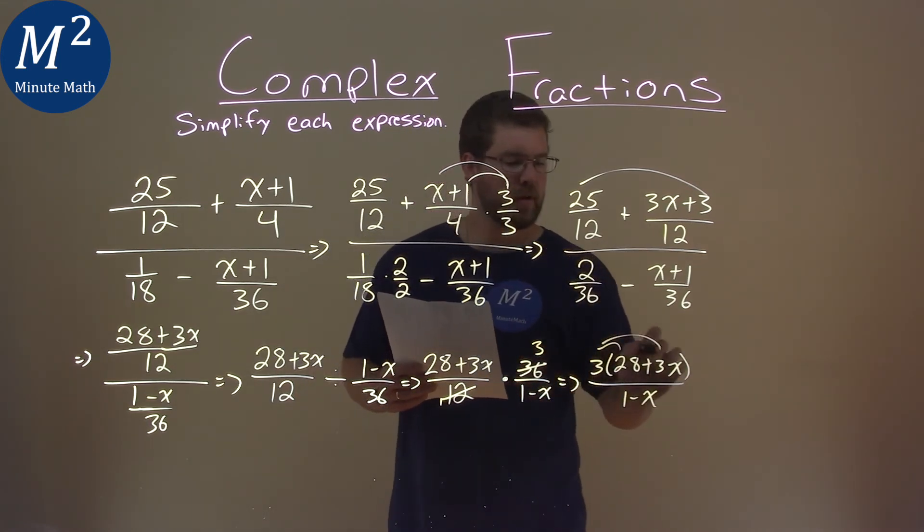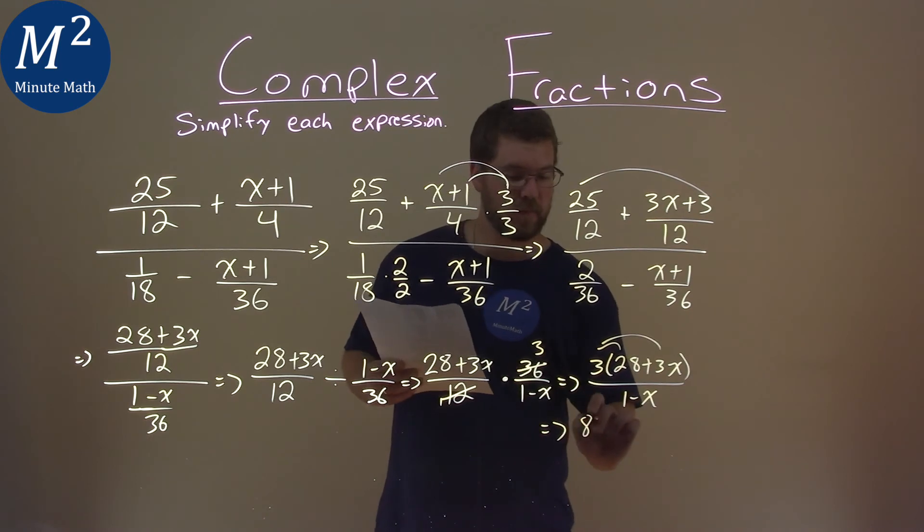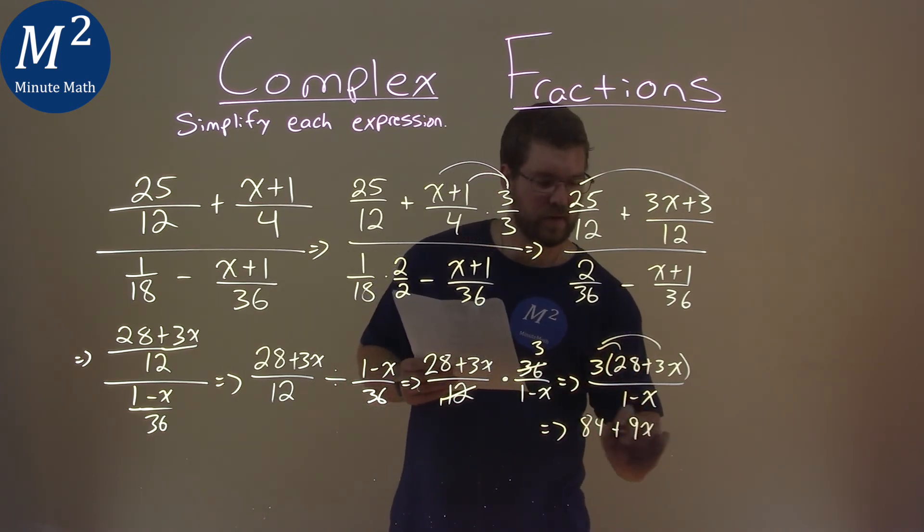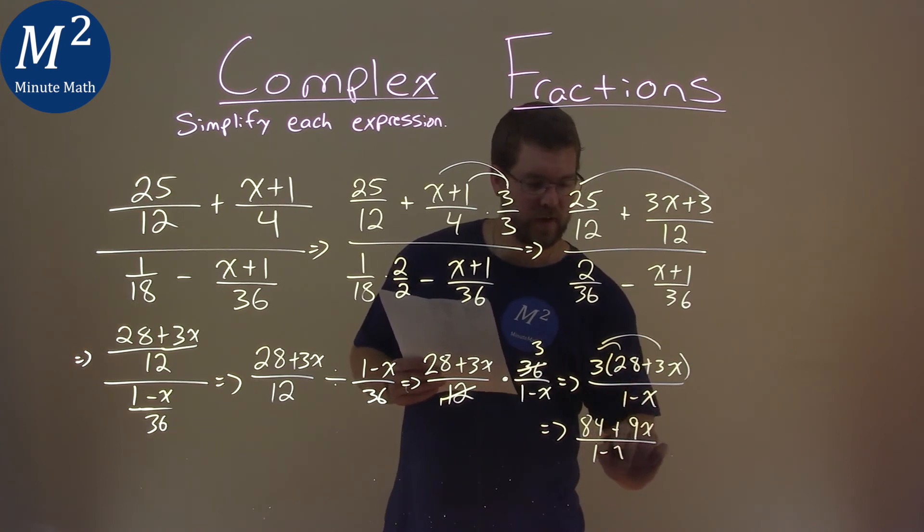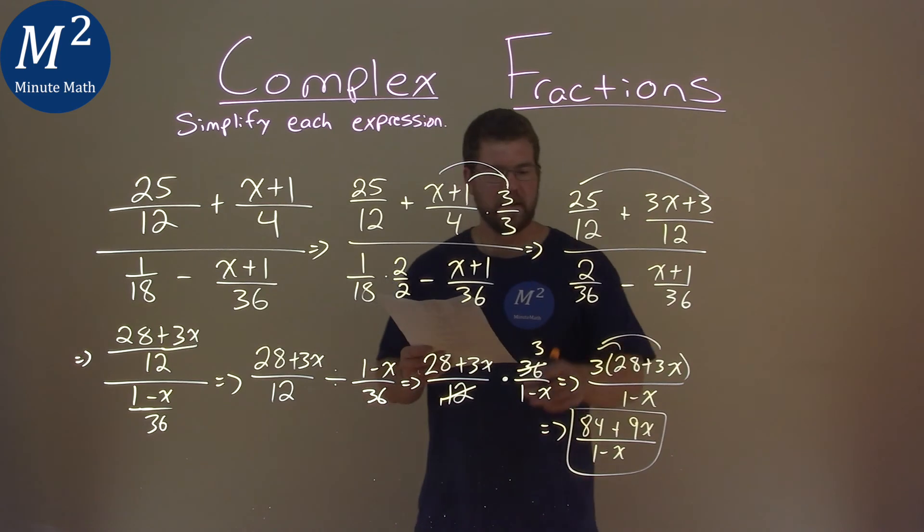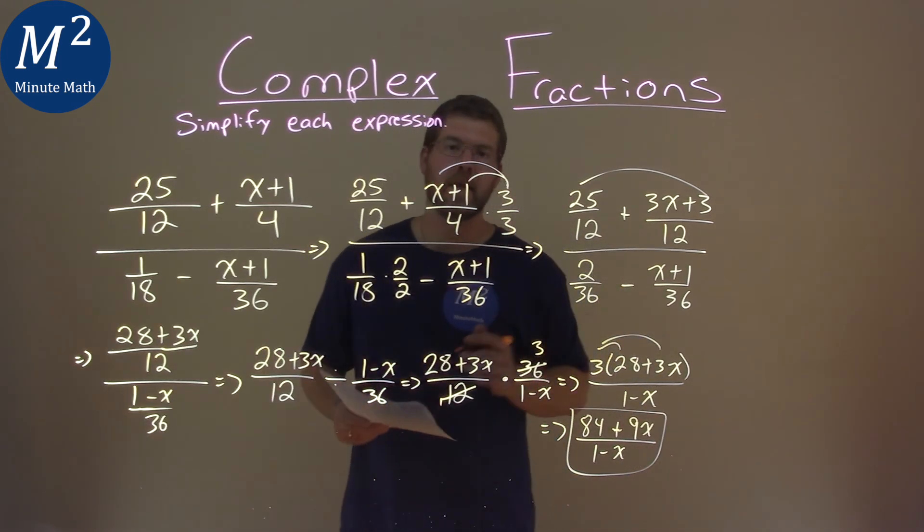Let's distribute this 3 across to both parts. 3 times 28 is 84, plus 3 times 3x which is 9x, all that over 1 minus x. And after all that work, our final answer here is 84 plus 9x over 1 minus x.